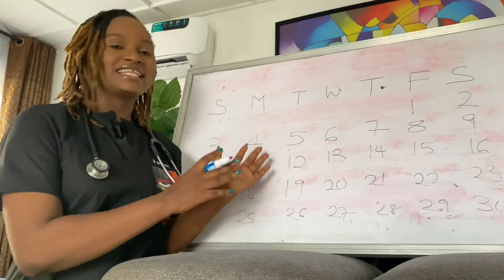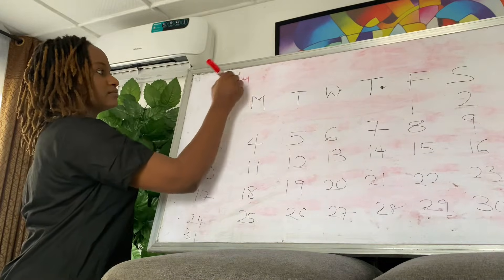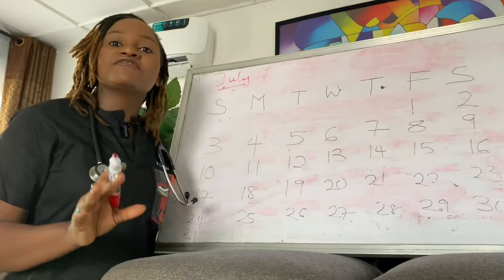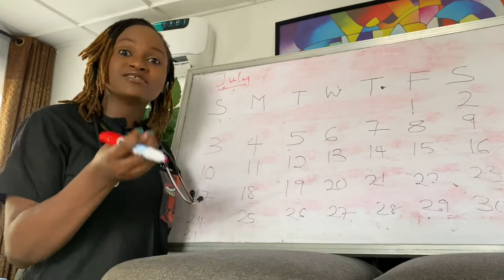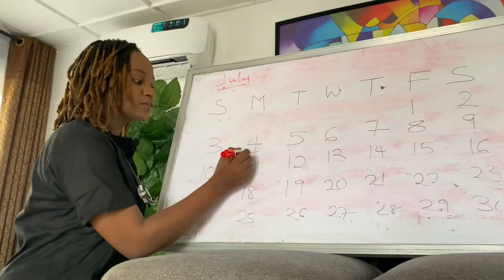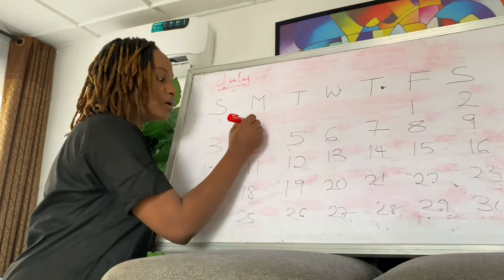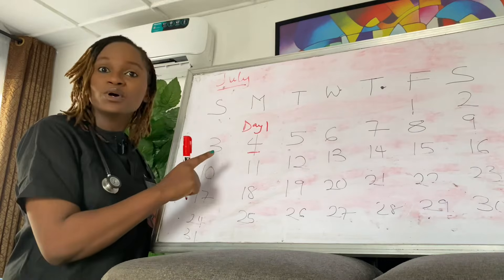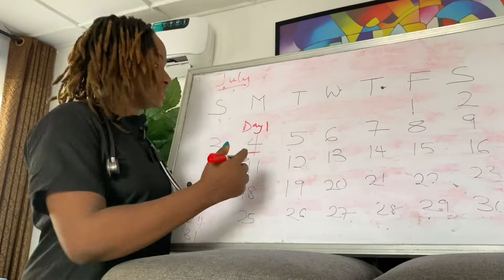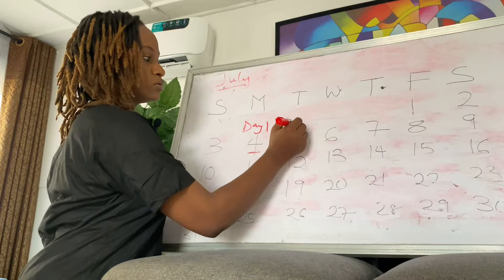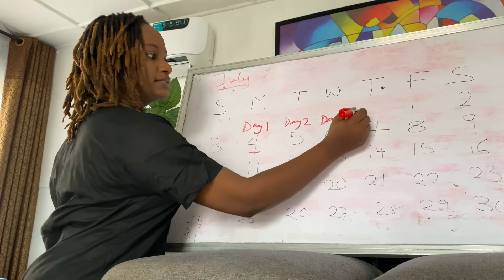I'm going to show you on this July calendar. If your period — that is the very first day you see blood — is on the 4th of July, that will be your day one. And let's say you bleed for three or four days: day two, day three, and day four.